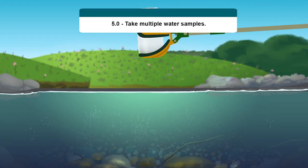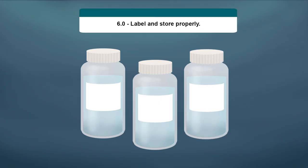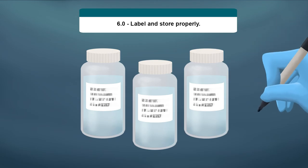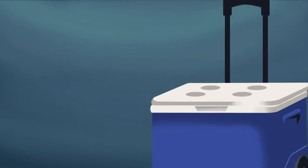Step 5: Take multiple water samples using clean bottles and gloves. Finally, Step 6: Label and store the samples in a cooler at 4 degrees Celsius, so they can be transported to the lab for testing.